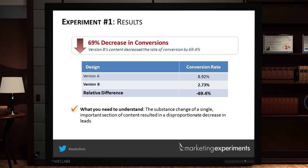Version B — the scorecard — saw a 69% decrease in conversions. The substance change of a single important section completely destroyed the conversion rate. This is an organization that needs to talk to people in order to begin the process of helping them see if this community is right for them. So what was wrong with Version B? What made the scorecard a bad call to action?